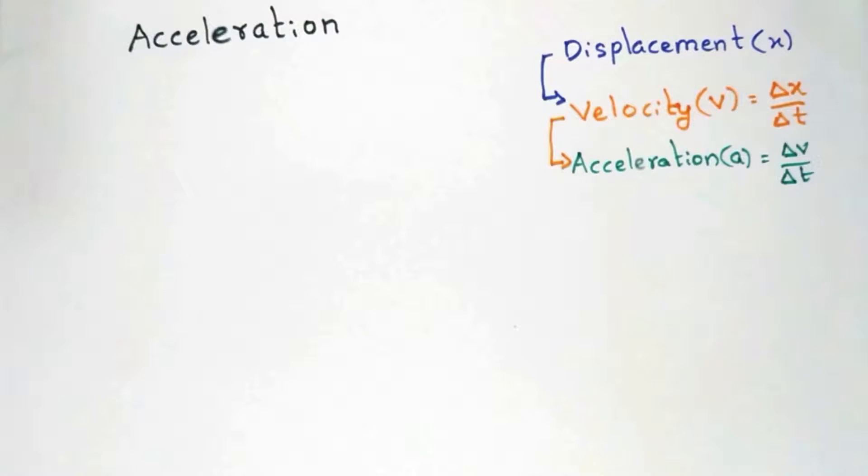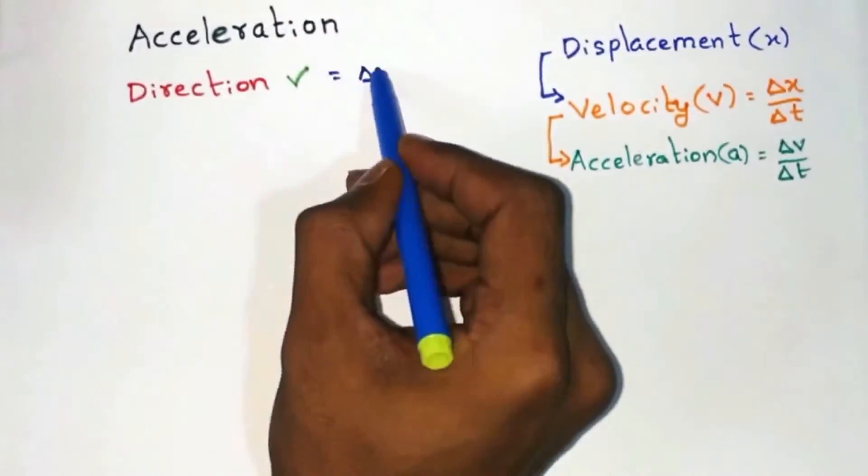Since velocity is a vector quantity, change in velocity is also a vector quantity. So acceleration has a direction and it will be the same as that of change in velocity.